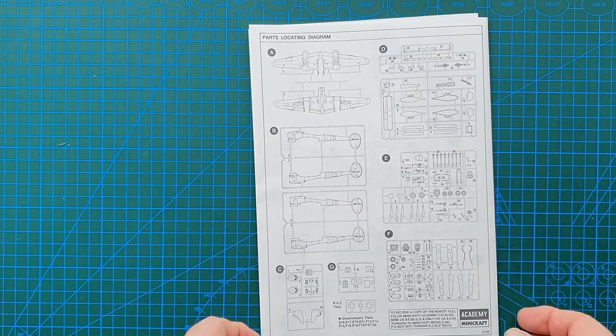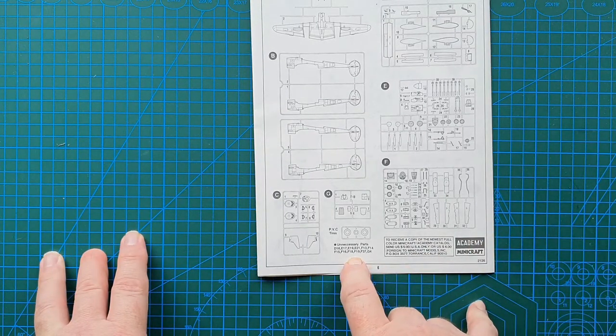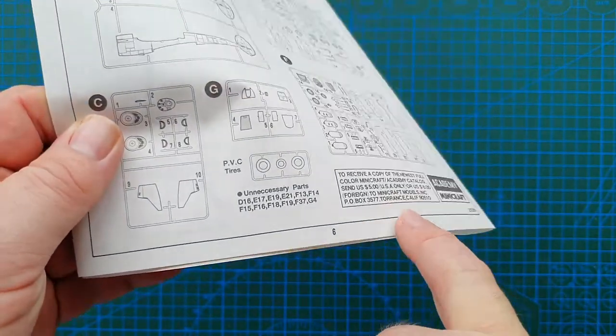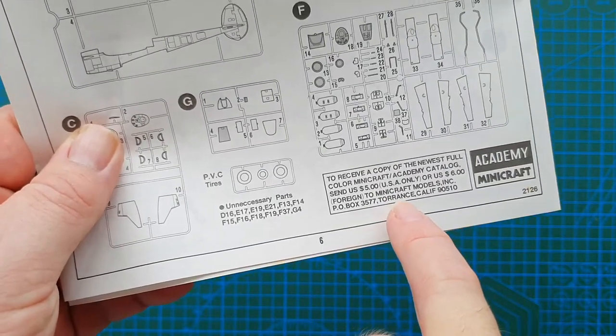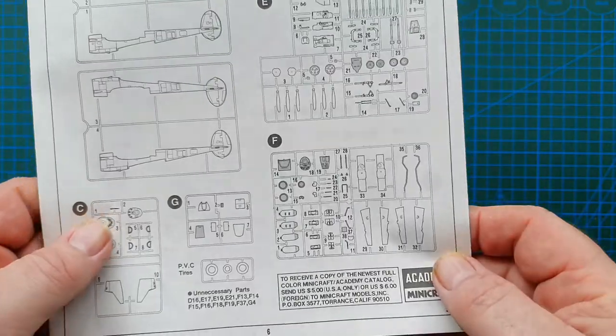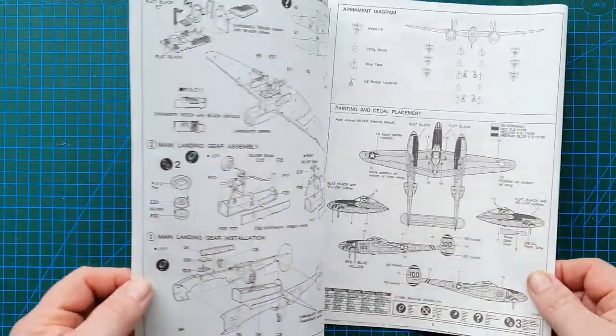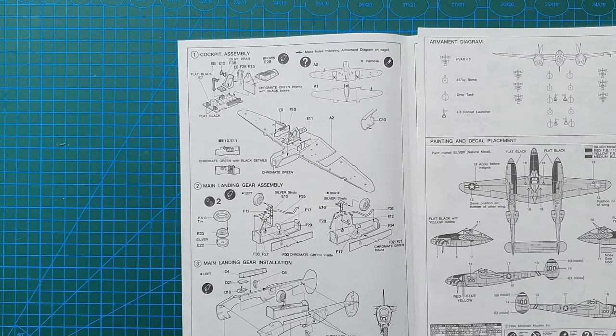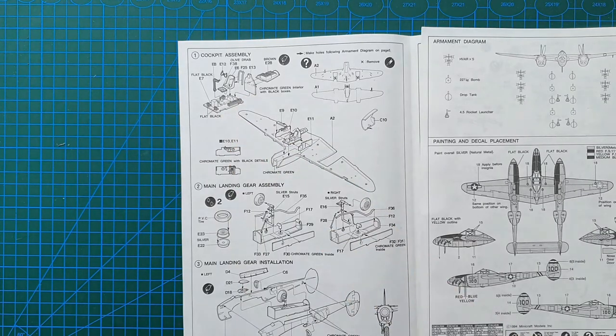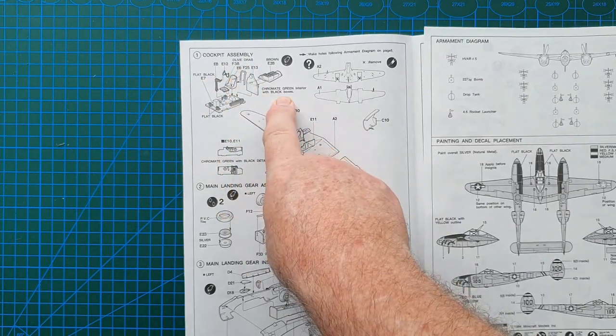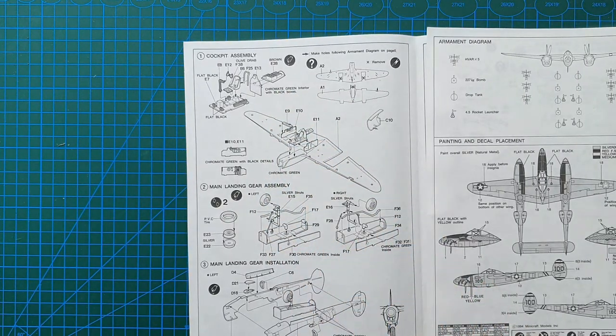Sprue layout is on the back. There is a list of parts which are not required. This, remember, is a 1996 kit. So I wouldn't be sending five bucks to Minicraft in California, but that explains why it says Academy Minicraft on this particular reebox. So naturally enough, as with most aircraft kits, you start with the cockpit. Unusually though, this does have color call-outs: black, olive drab, chromate green with black boxes. Throughout the kit, because it's an older style kit, it actually tells you what color to paint the parts, which makes it a lot easier.